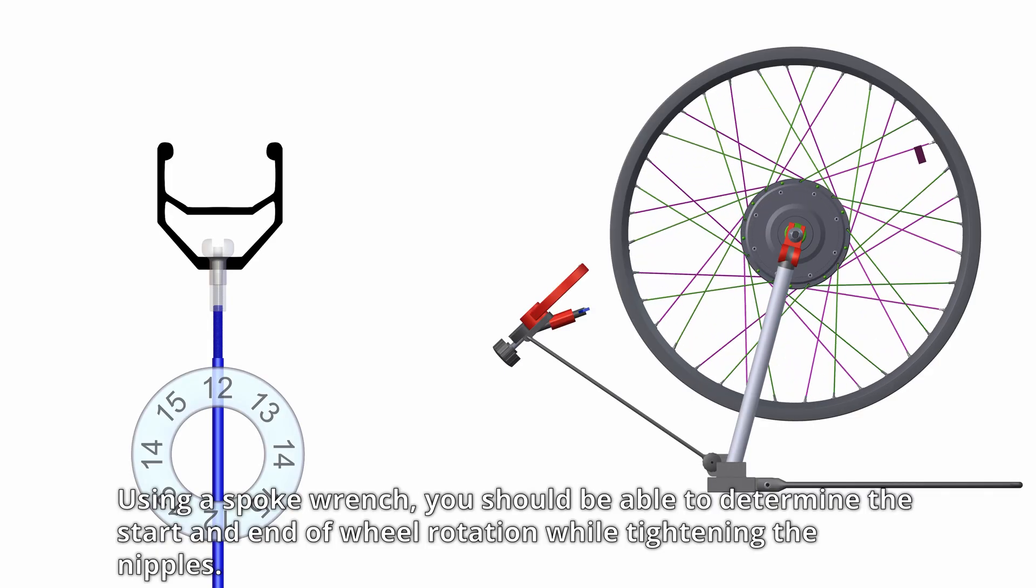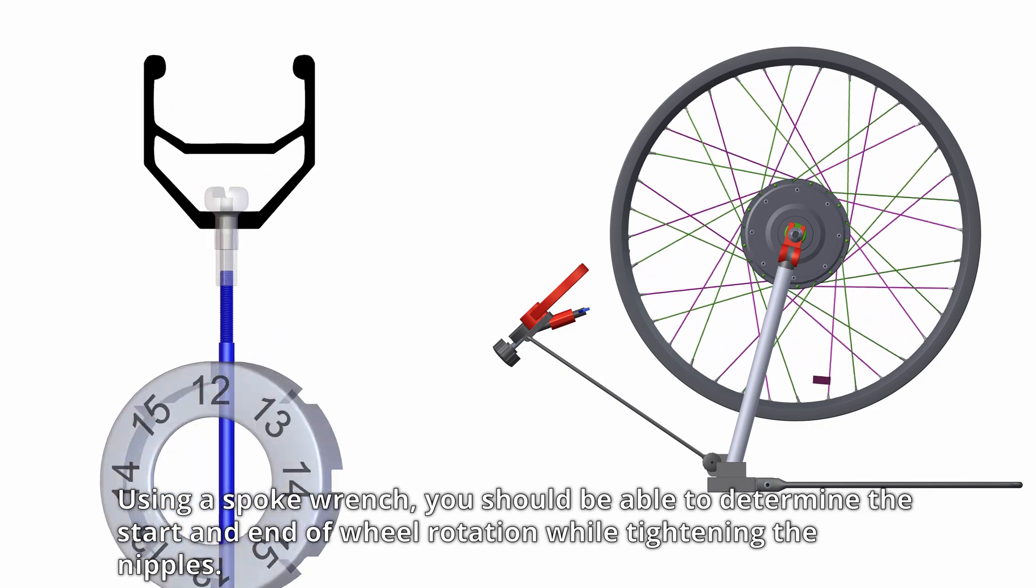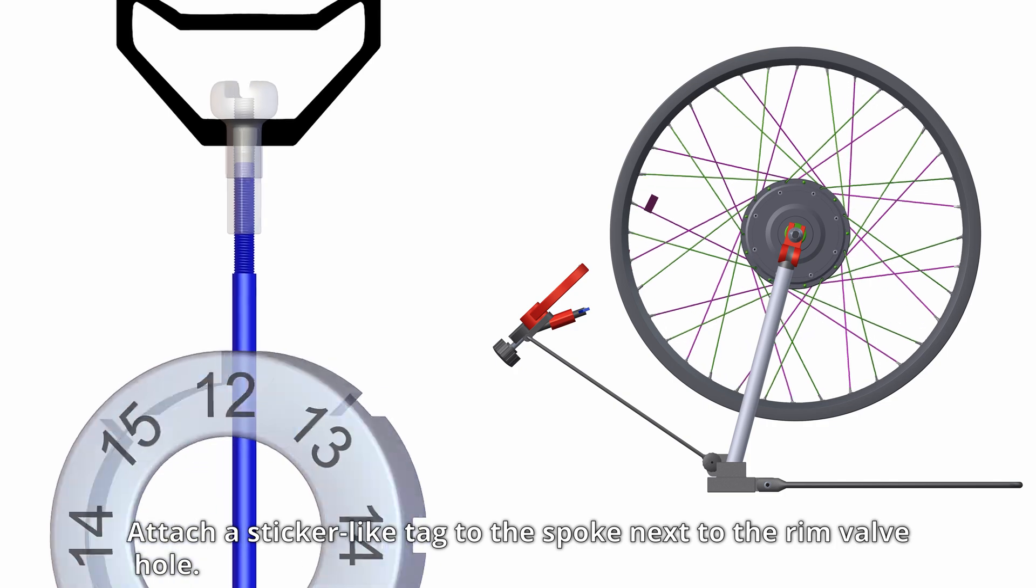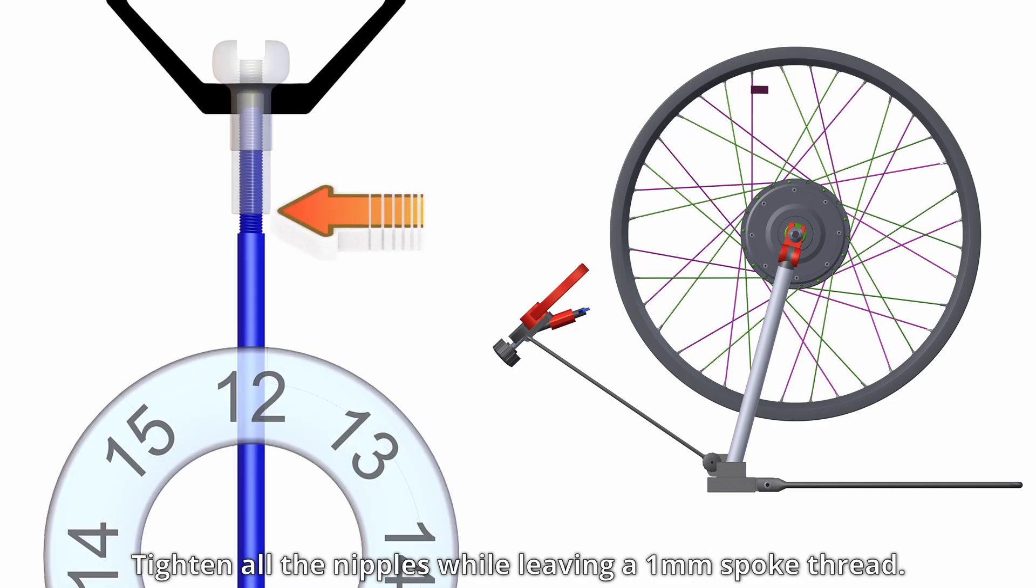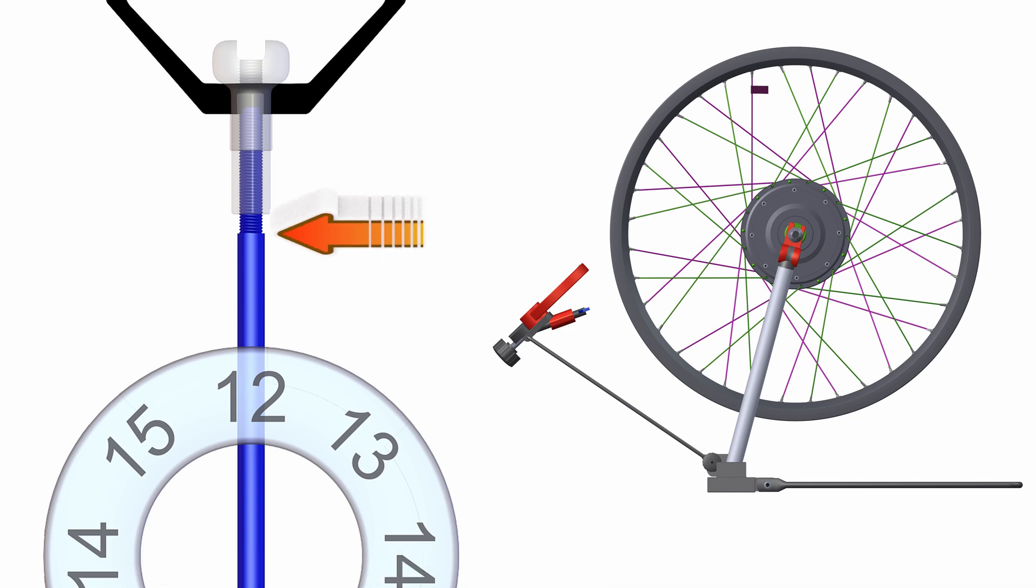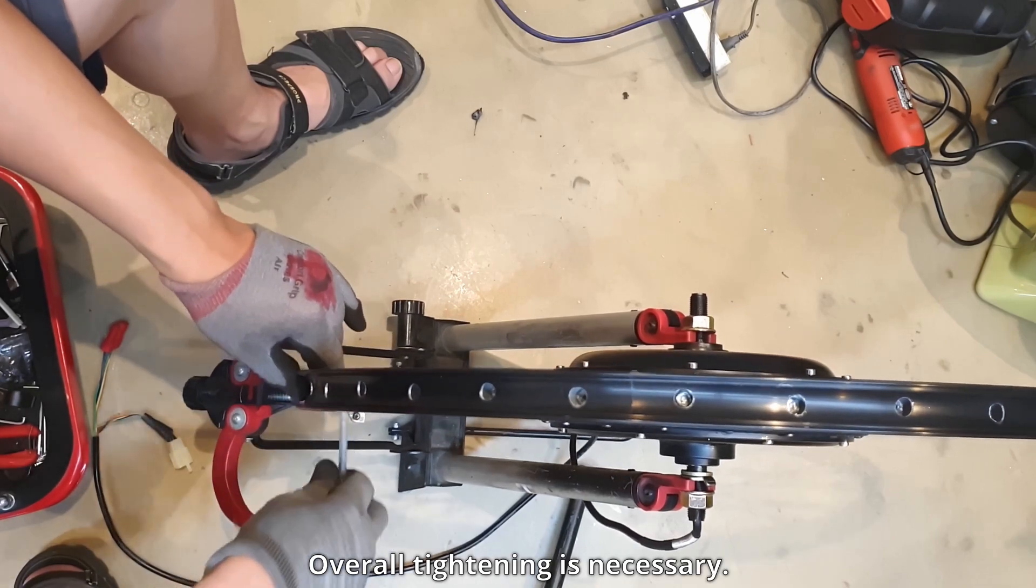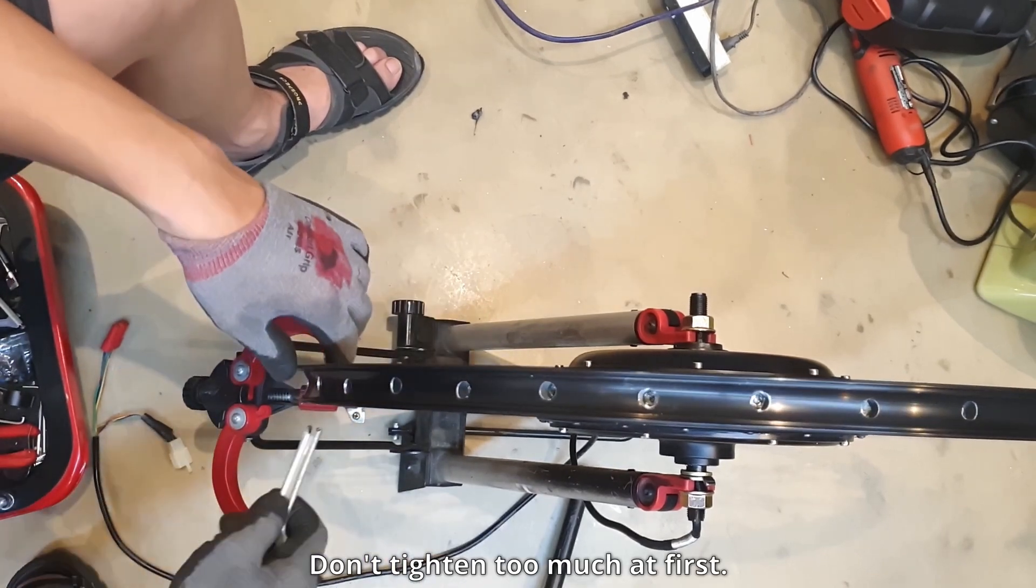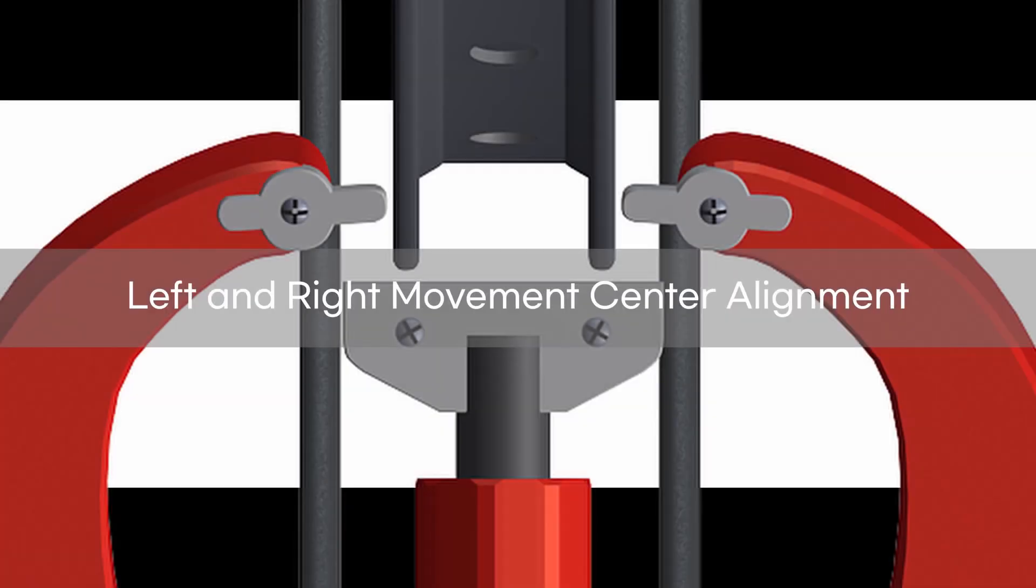Using a spoke wrench, you should be able to determine the start and end of wheel rotation while tightening the nipple. Attach a sticker-like tag to the spoke next to the rim valve hole. To tighten the spoke nipple, turn it clockwise. Tighten all the nipples while leaving a 1mm spoke thread. Overall tightening is necessary. Don't tighten too much at first.